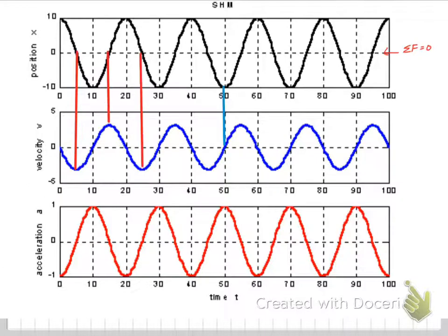In fact, every time we're at an equilibrium position, we have a maximum velocity. Then, when we're at maximum displacement, if you'll notice right here at 50 seconds, we have zero velocity. And every time we're at a maximum displacement, we have zero velocity.